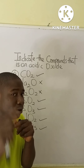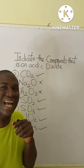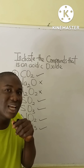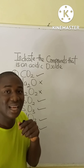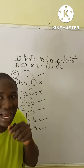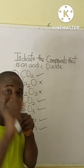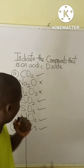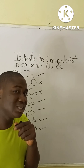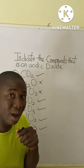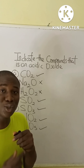Since NO₂ is a mixed acidic oxide, when it dissolves in water it produces two acids: HNO₂, called nitrous acid, and HNO₃, called nitric acid. For P₂O₅, dissolving in water produces phosphoric acid, H₃PO₄.